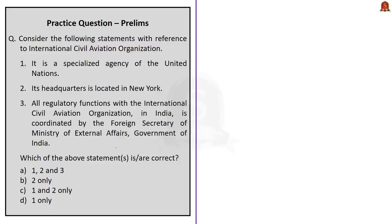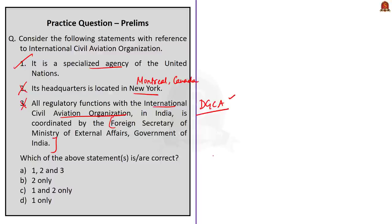The Convention on International Civil Aviation was signed at Chicago on 7 December 1944, hence called the Chicago Convention. It entered into force on 4 April 1947. Based on the convention's provisions, the International Civil Aviation Organization or ICAO came into being on 4 April 1947, and in October 1947 it became a specialized agency of the United Nations linked to the Economic and Social Council. The DGCA coordinates all regulatory functions with ICAO. Now the question on ICAO: Statement 1 — it is a specialized agency of the United Nations — is correct. Statement 2 — its headquarters is in New York — is incorrect; ICAO headquarters is in Montreal, Canada. Statement 3 — regulatory functions with ICAO are coordinated by the Foreign Secretary of the Ministry of External Affairs — is incorrect; it is coordinated by the DGCA under the Ministry of Civil Aviation. Therefore, the correct answer is option D, 1 only.